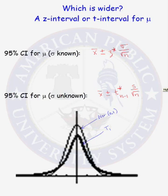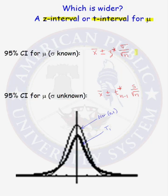Let's investigate the difference in the width of a confidence interval for a z confidence interval compared to a t confidence interval for the population mean mu. The 95% confidence interval for mu when sigma is known is given by x bar plus or minus a z critical value times sigma divided by the square root of n. The 95% confidence interval for mu when sigma is unknown is given by x bar plus or minus t star with n minus 1 degrees of freedom times s, the sample standard deviation, divided by the square root of the sample size.